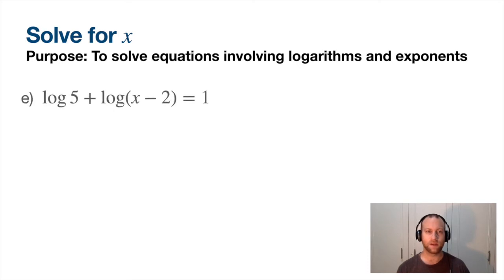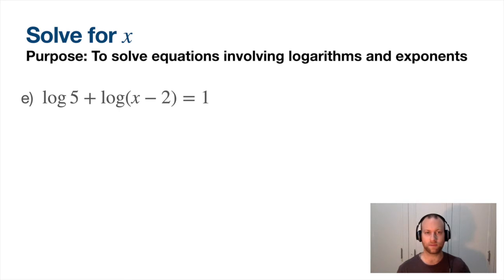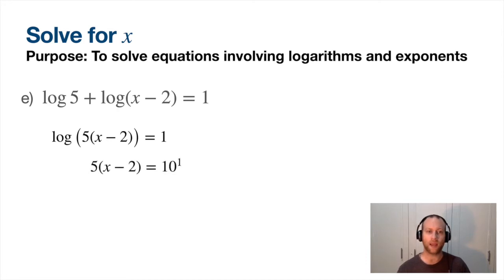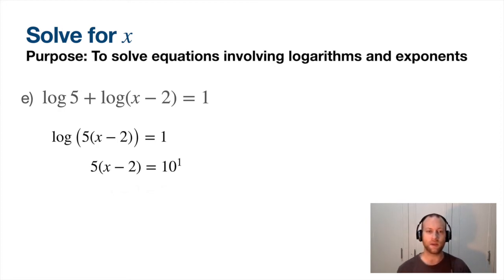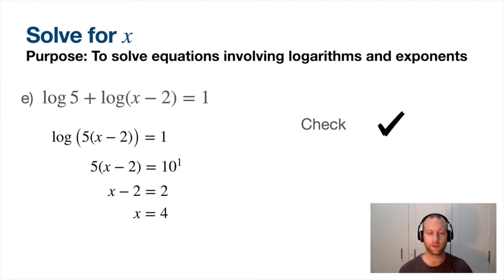Next — log 5 plus log(x minus 2) equals 1. Because I've got two logs on the left, I can't just do 10 to the power of immediately. First I need to combine those logs, then I do 10 to the power of both sides. The logs cancel out on the left — divide by 5, add 2, not too bad. Check it — put the answer back into the equation and it works.